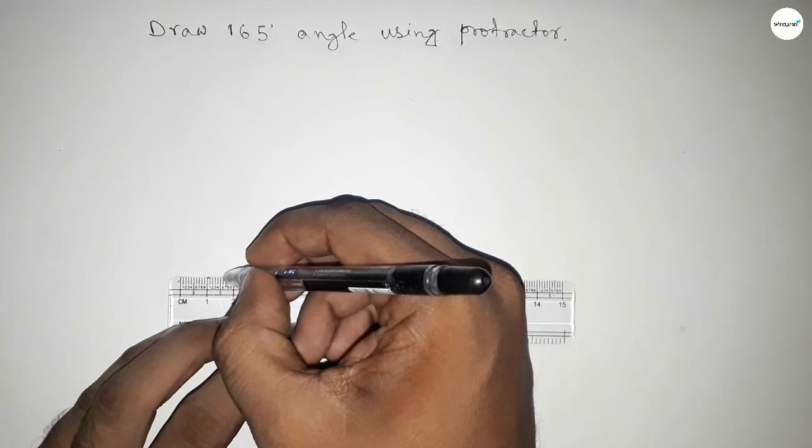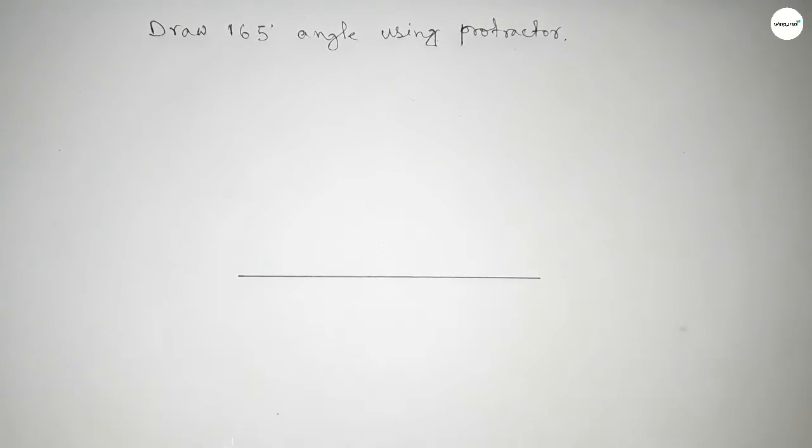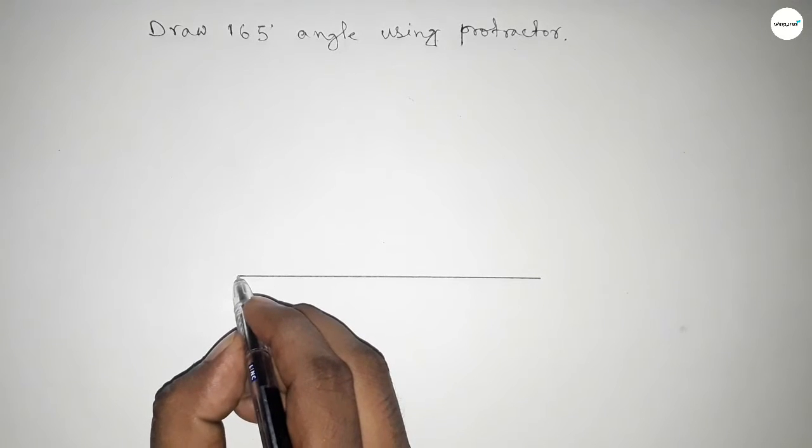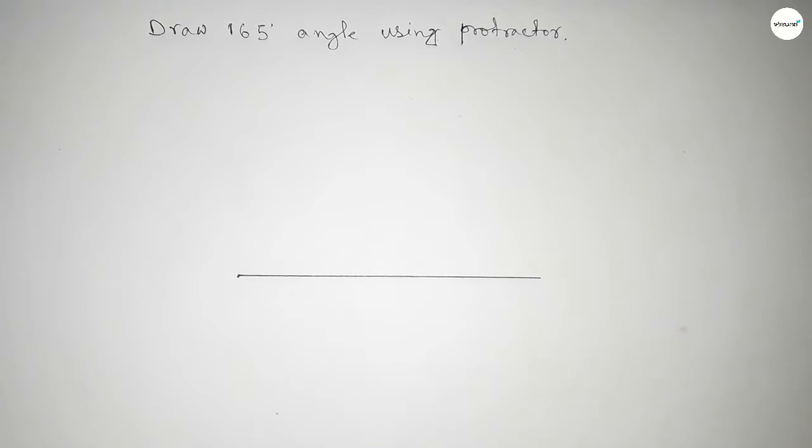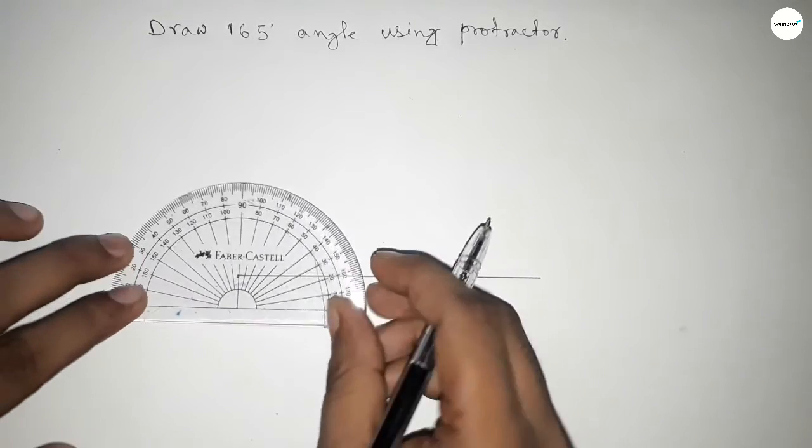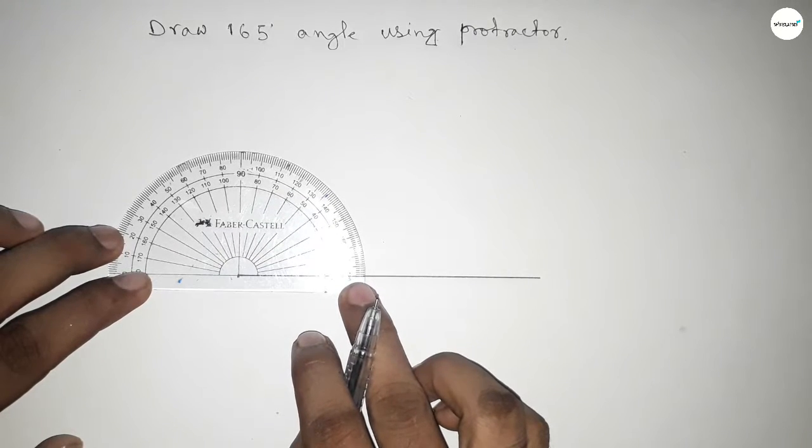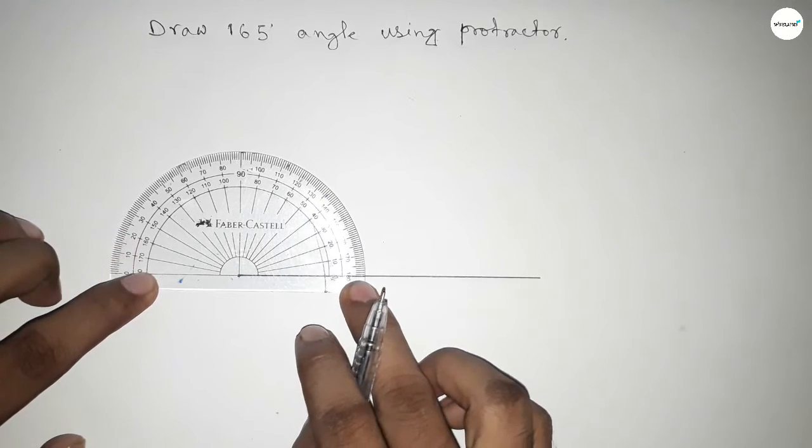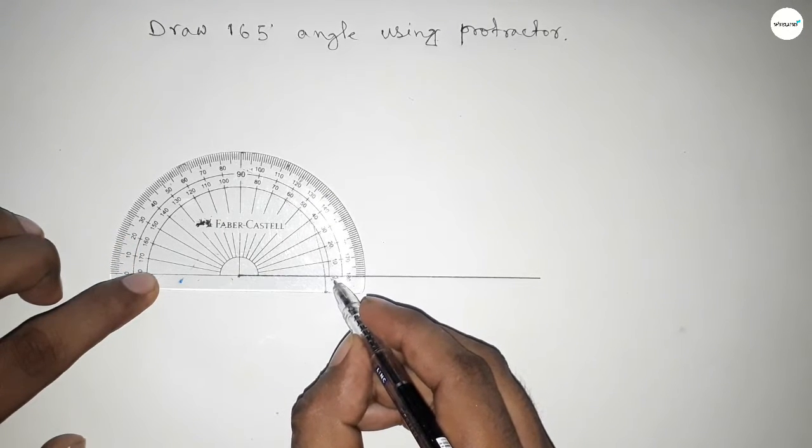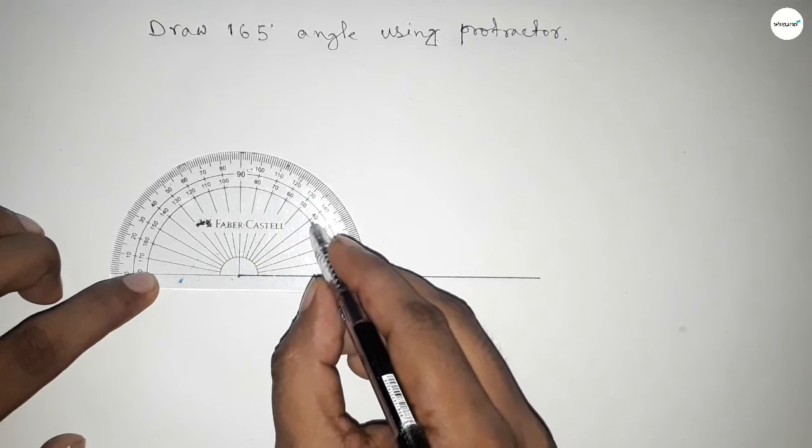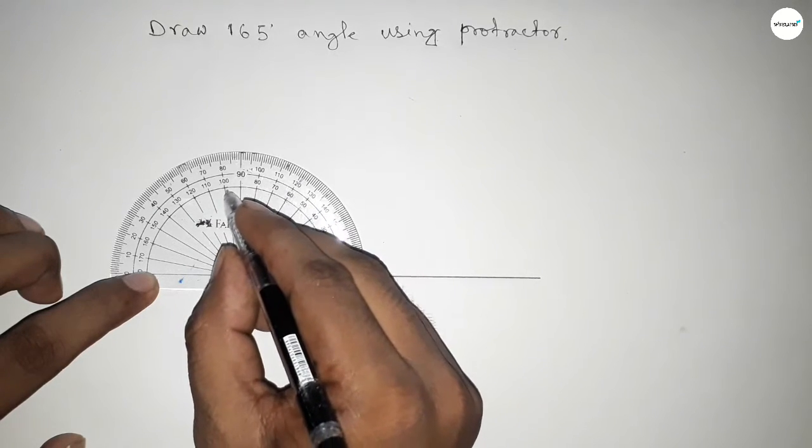Now pointing out here to draw the 165-degree angle. Putting the protractor on the line perfectly to count the angle. So this is 0, 10, 20, 30, 40, 50, 60, 78, 90...